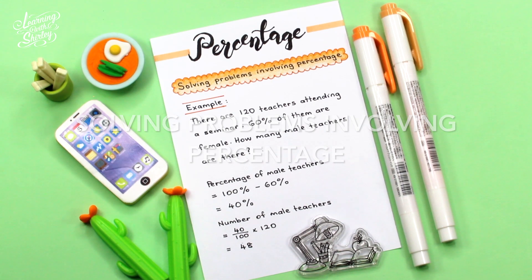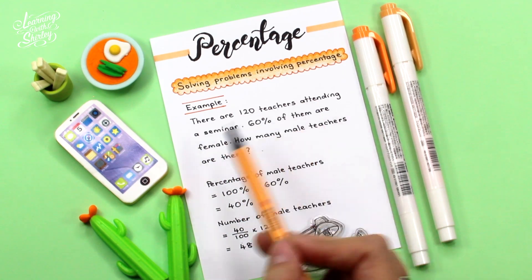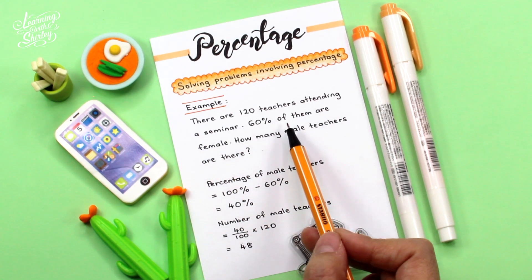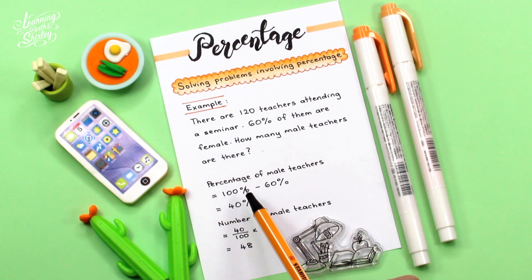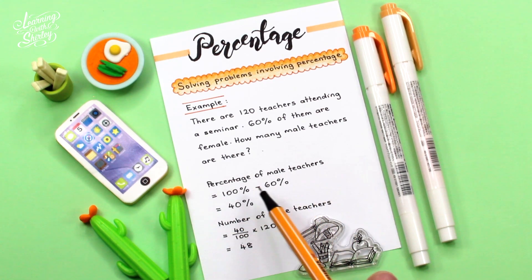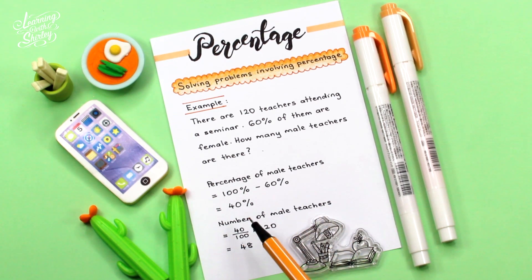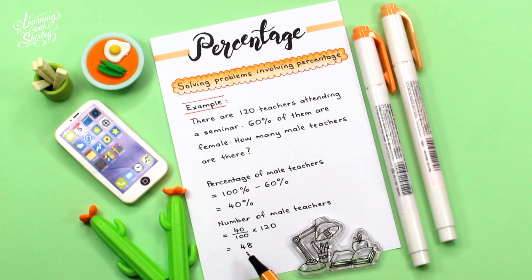How to solve problems involving percentage. There are 120 teachers attending a seminar. 60% of them are female. How many male teachers are there? To find the percentage of male teachers, we use 100% minus 60%, which equals 40%. Then to find the number of male teachers, we use 40% times 120, which is the total number of teachers. Therefore the answer is 48.